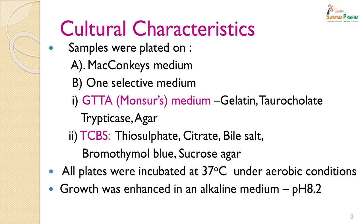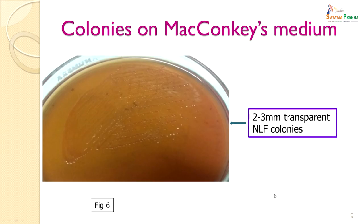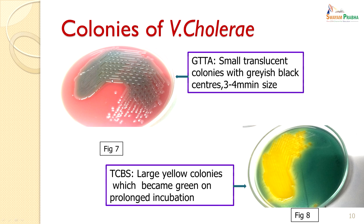The colonies on McConkey's medium were 2 to 3 millimeters in size and transparent non-lactose fermenters — so this was a non-lactose fermenting organism causing the diarrhoea. The colonies on GTTA medium were very characteristic: small translucent colonies with grayish-black centers, 3 to 4 millimeters in size. The TCBS is the most commonly used selective medium for Vibrio cholerae, and colonies are large and yellow, becoming green on prolonged incubation.